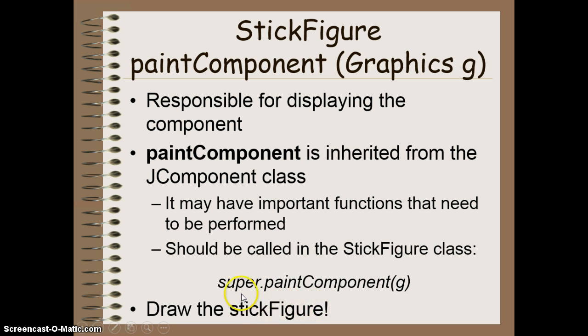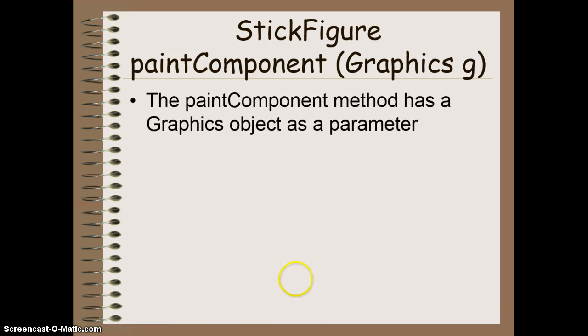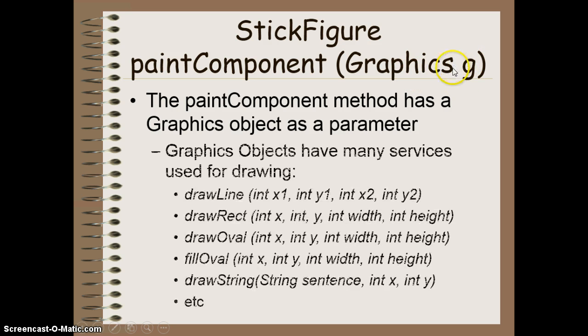Once we've done that, then we just need to write the code to actually draw our Stick Figure or whatever component it is that we're trying to draw. Now to do that drawing, we have to use this object that is being passed as a parameter. This is a Graphics object from the Graphics class. And we're going to call it G for simplicity's sake. If you want to know all of the methods that exist for this class, you can go into the Java Docs, the documentation online, and look up the Graphics class and it will provide you all the methods.